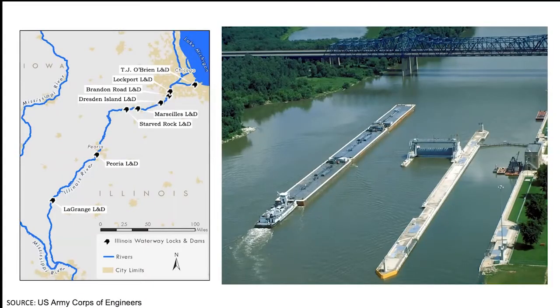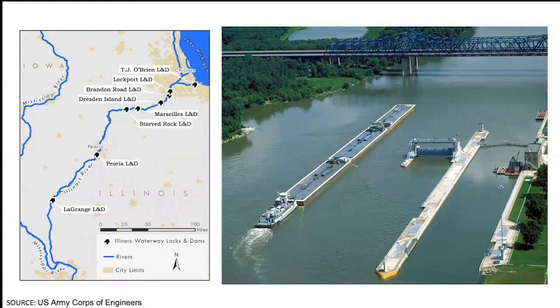Another series of physical alterations is the construction of the lock and dam system on the downstream portions of the Illinois River. These locks and dams are designed to maintain a navigation channel for the movement of agricultural products between Chicago and St. Louis.